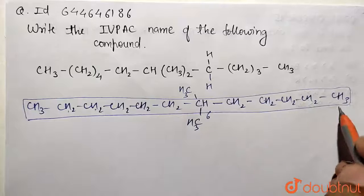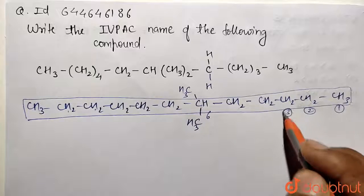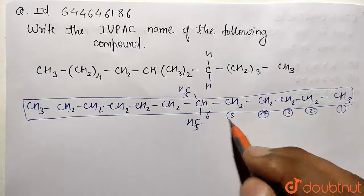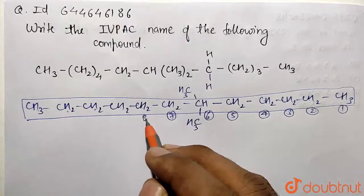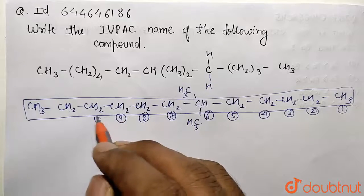Numbering from the left gives the substituent on the sixth position, from the right gives seventh position. We prefer lower numbering, so we number from the left side as it's nearer.